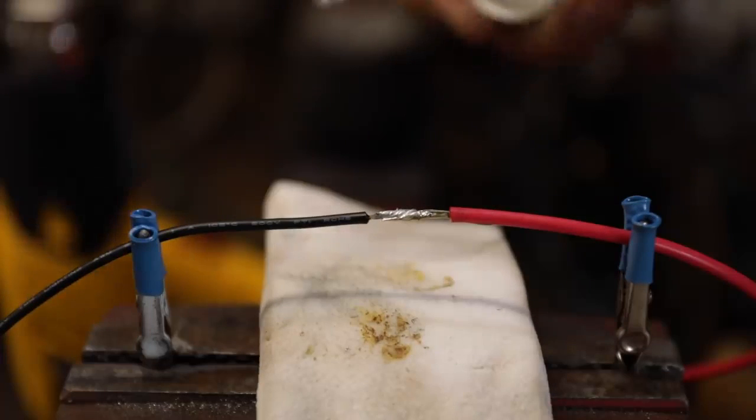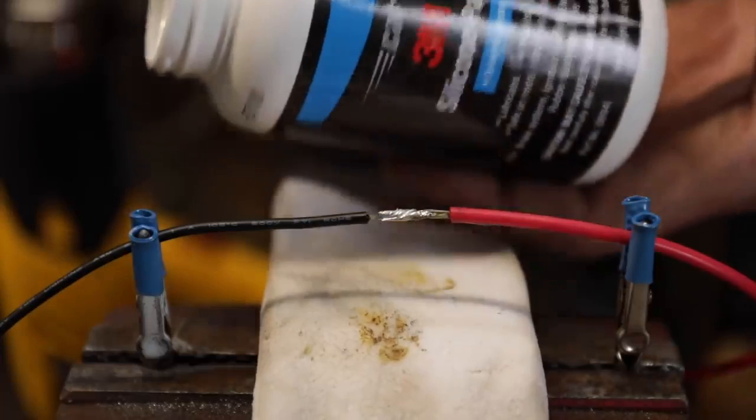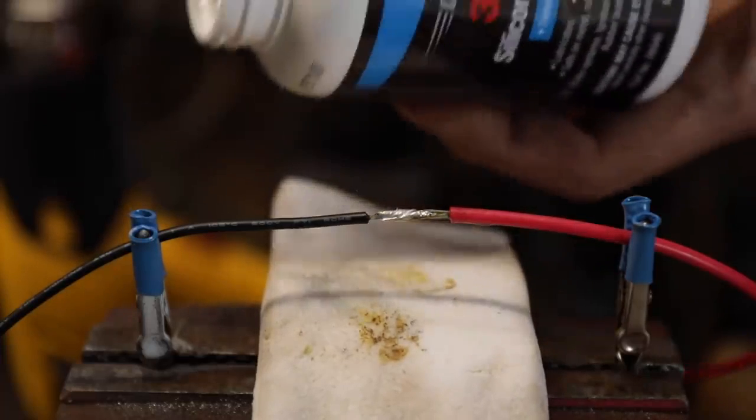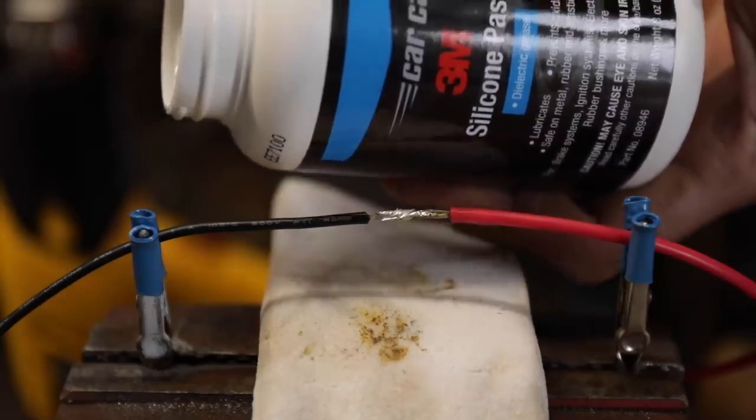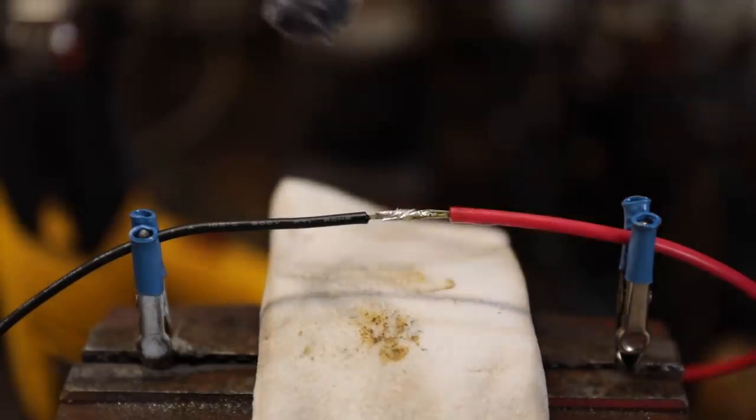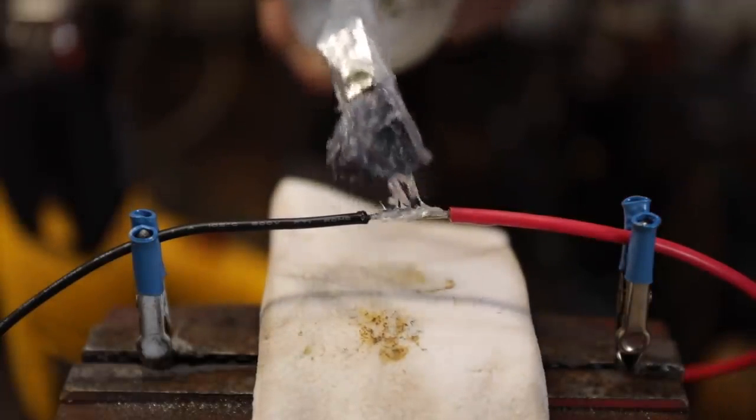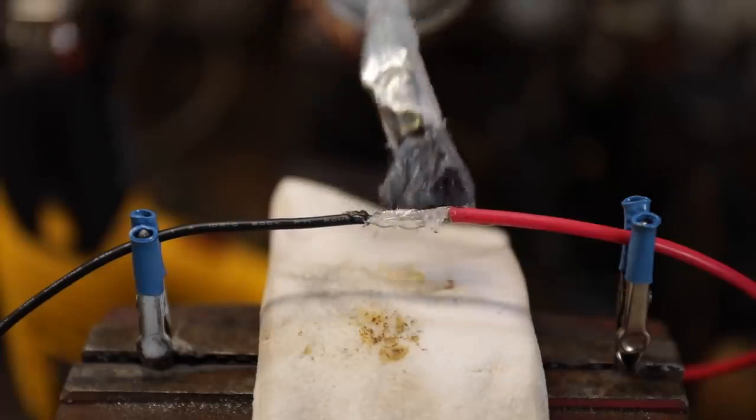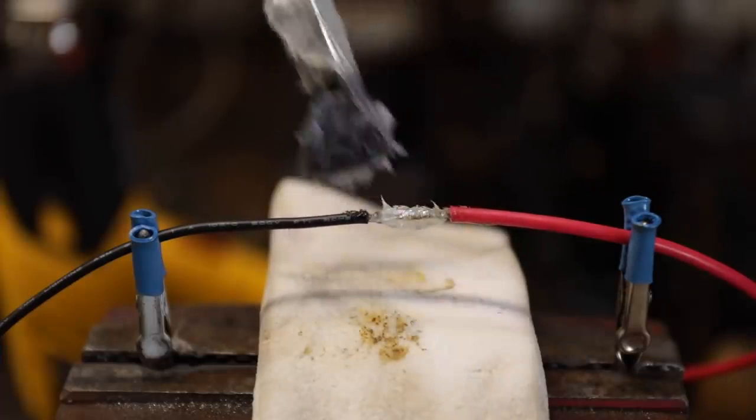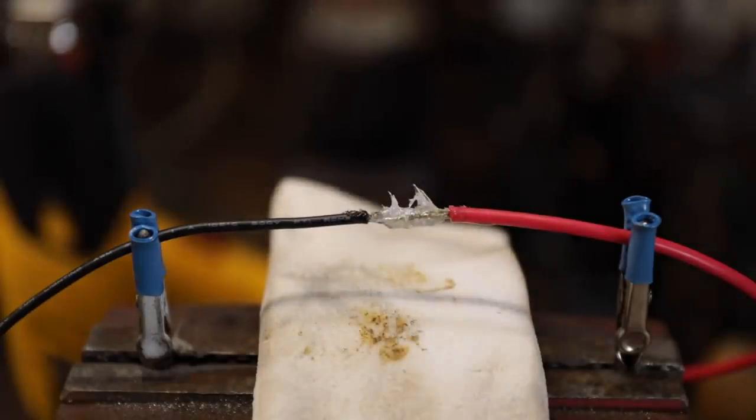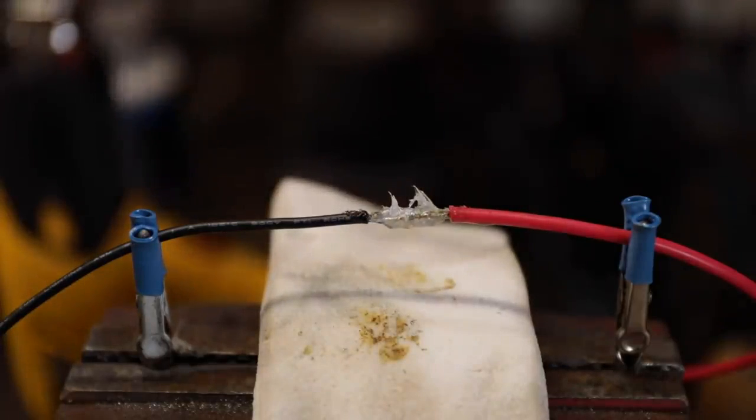Now we want to waterproof this. This is where we're going to use the 3M silicone paste. Having this in your shop anytime you put together electrical connectors or anything like that is so good. We'll just put a little bit of that on there like that, and then now we're going to do our shrink tubing.